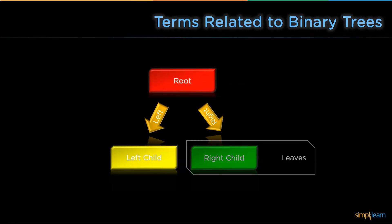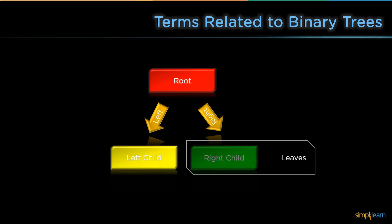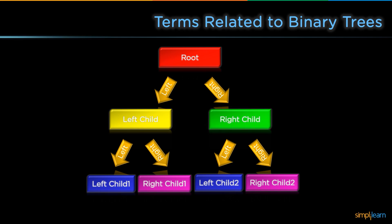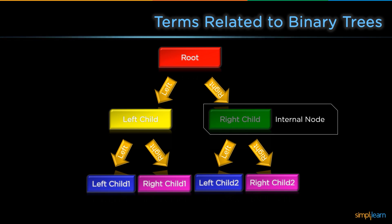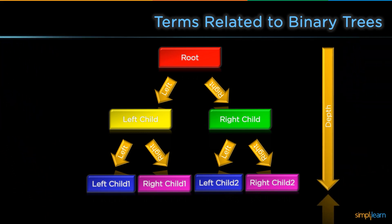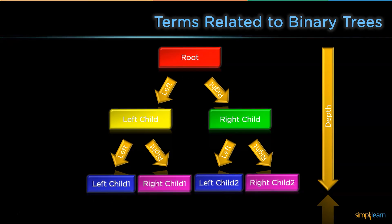Leaf nodes are nodes which have no children. A parent node is any node, apart from the root node, which has at least one child. Any node with a parent is called a child node. An internal node is any non-leaf node. The height of the binary tree is the longest path from the root to any leaf node. The depth of a node is the total number of edges from the root node to that target node.